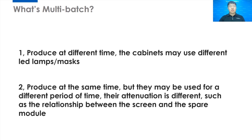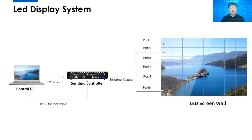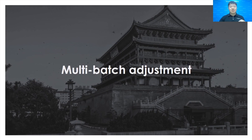What about the system structure when performing multi-batch adjustment? The control PC provides the video source and control signal to the sending card, and the sending card directly uses an internet cable to load the screen. As you can see, we do not have any video processors. This means before starting the multi-batch adjustment, we should make sure to remove all video processing devices, otherwise it may cause problems.